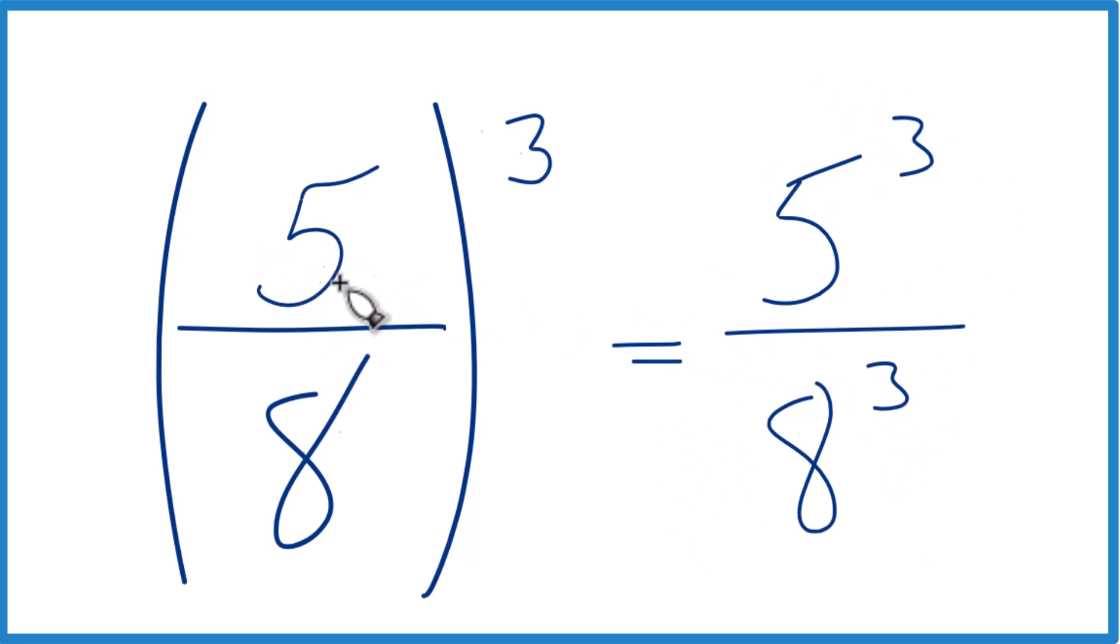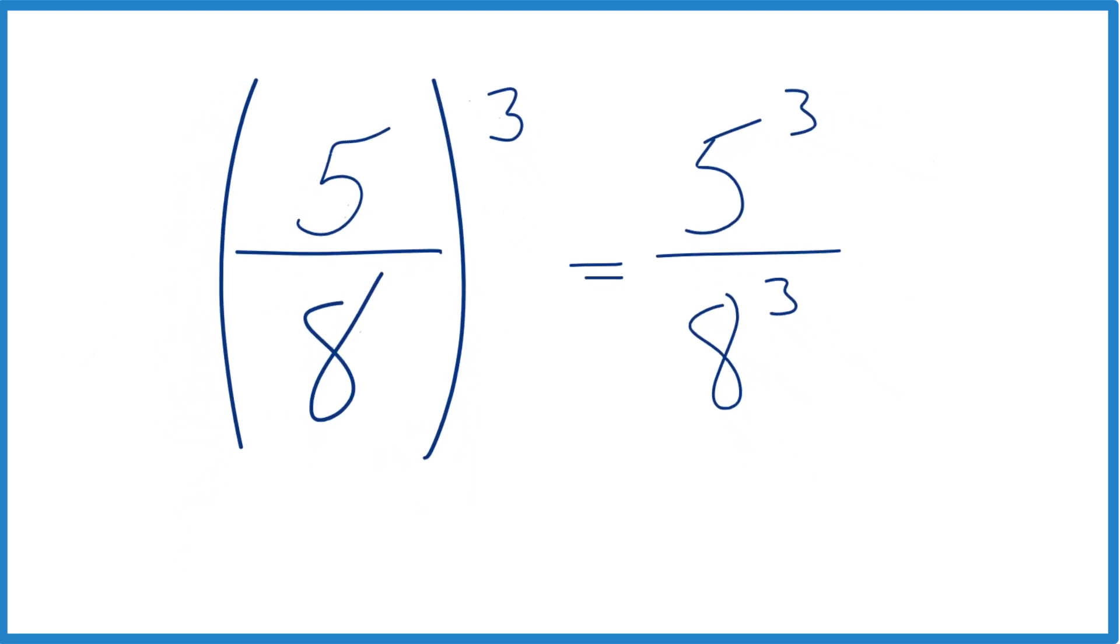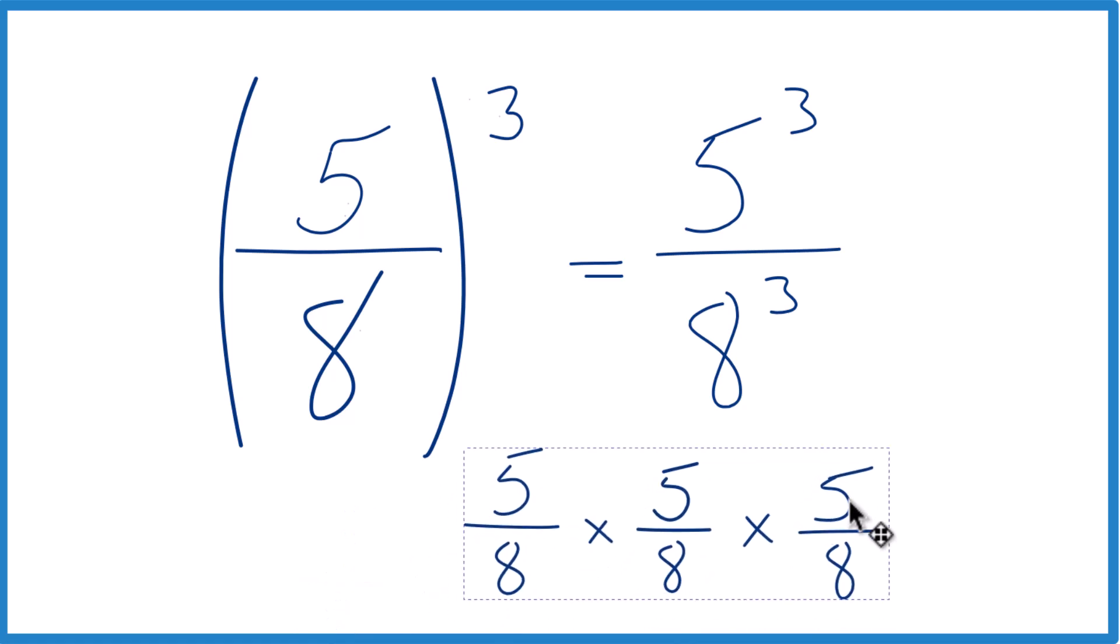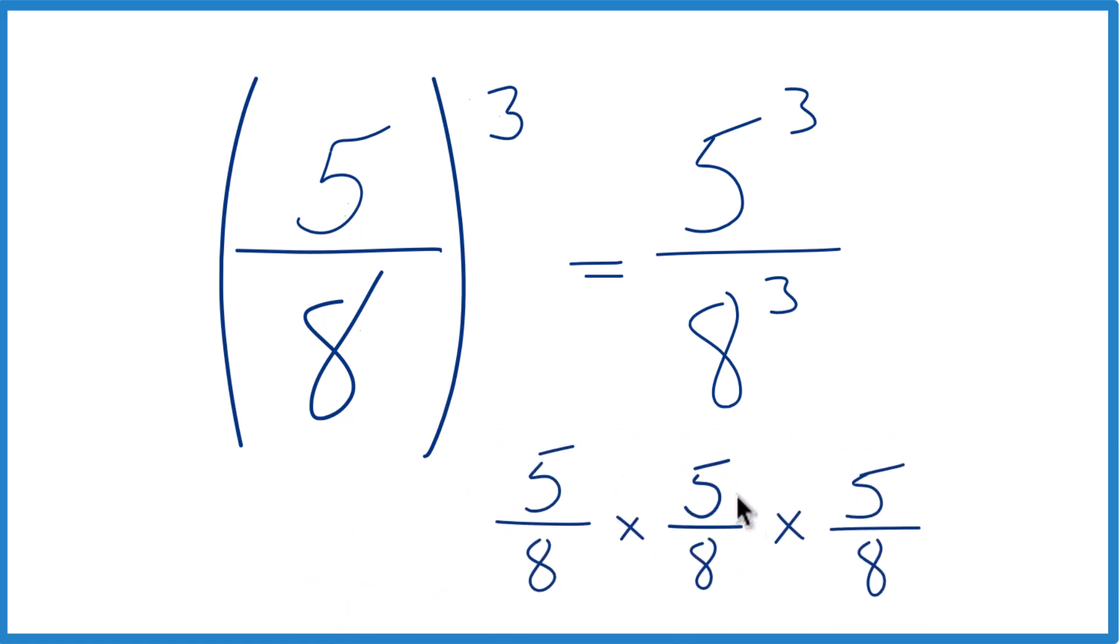And you can think about it this way. Five-eighths to the third power, that's just five-eighths times five-eighths times five-eighths. So we have five times five times five, that's five to the third. Eight times eight times eight, that's our eight to the third here.